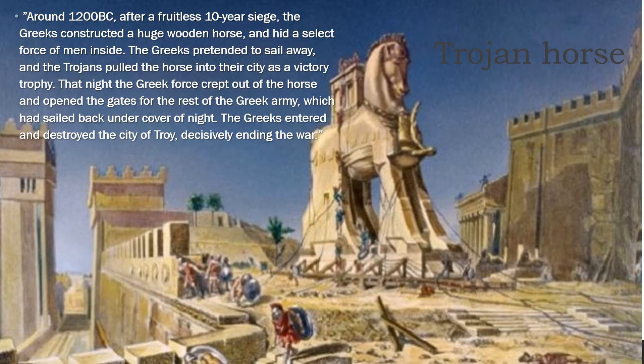The Trojan horse myth is where the name 'Trojan' comes from. It was a city called Troy that the Greeks could not capture after a ten-year siege. Eventually they built a huge horse, placed it outside the city, with an entire army hiding inside. When the city opened its doors to see the horse, the army was able to capture Troy.